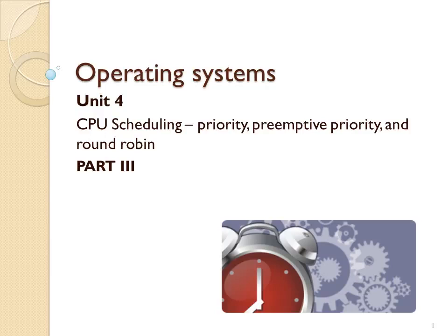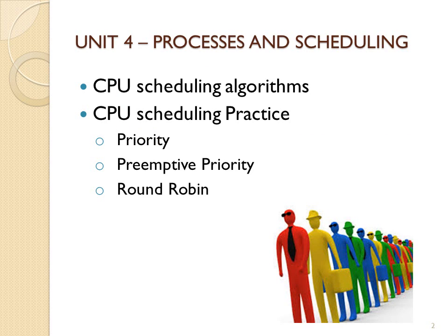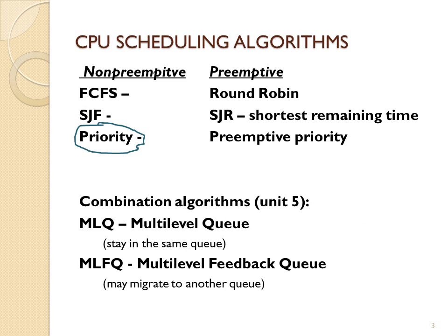Welcome to Unit 4 Part 3, some more CPU scheduling practice. We will be doing three algorithms in this CPU scheduling practice: priority, preemptive priority, and round-robin.